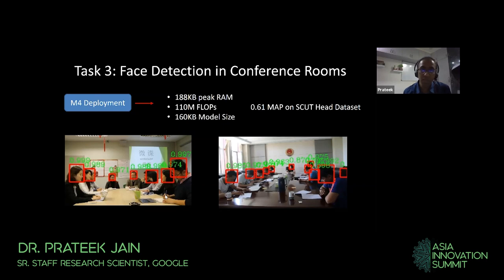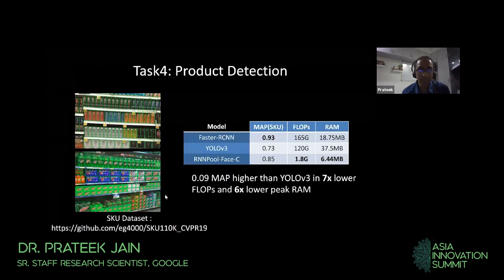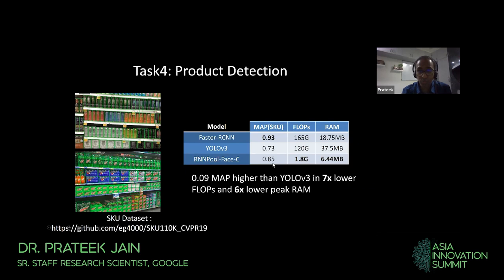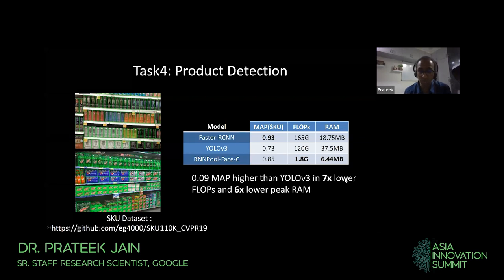Finally, we applied our solution to product detection — a challenging task where you have to find multiple products in an image frame. Faster RCNN is a state-of-the-art method here, and we observe that RNN Pool is within about 10% of Faster RCNN and about 10% better than YOLO V3, which is very popular in this domain. In terms of FLOPs, we are about 60 to 70x smaller than both YOLO V3 and Faster RCNN, and in terms of peak RAM we are about 6 to 7x smaller.